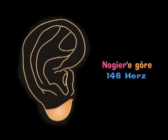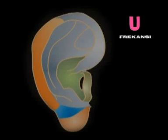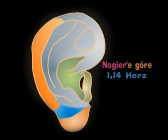G frekans bölgesi Nojiye'ye göre 146 Hz ile taranır. U frekans alanı yani tüm kulak kepçesinin ön yüzü Nojiye'ye göre 1,14 Hz ile taranır.